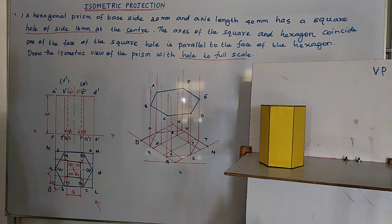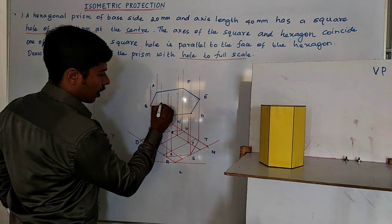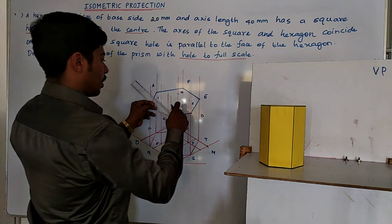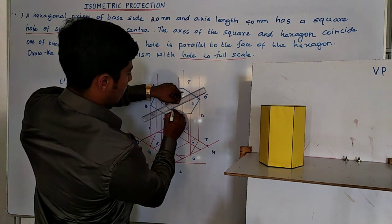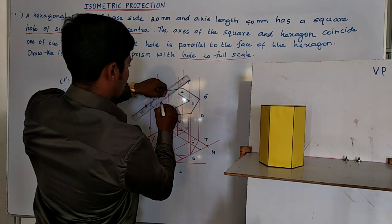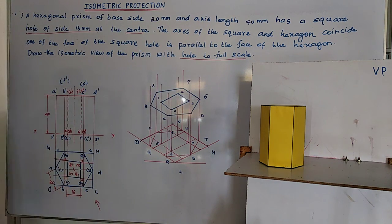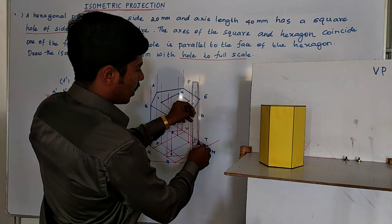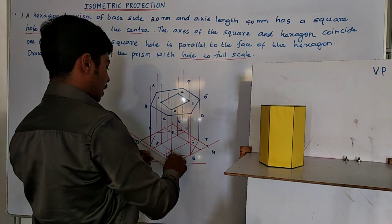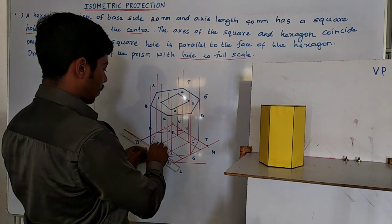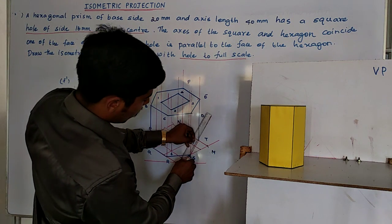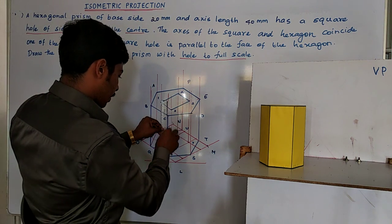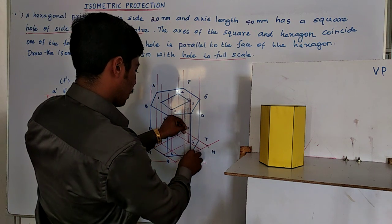So the top hexagon is complete. Then the inner points — this point is 1, 2, 3, and 4. We have the leftmost, rightmost, and inner points of the square hole marked.